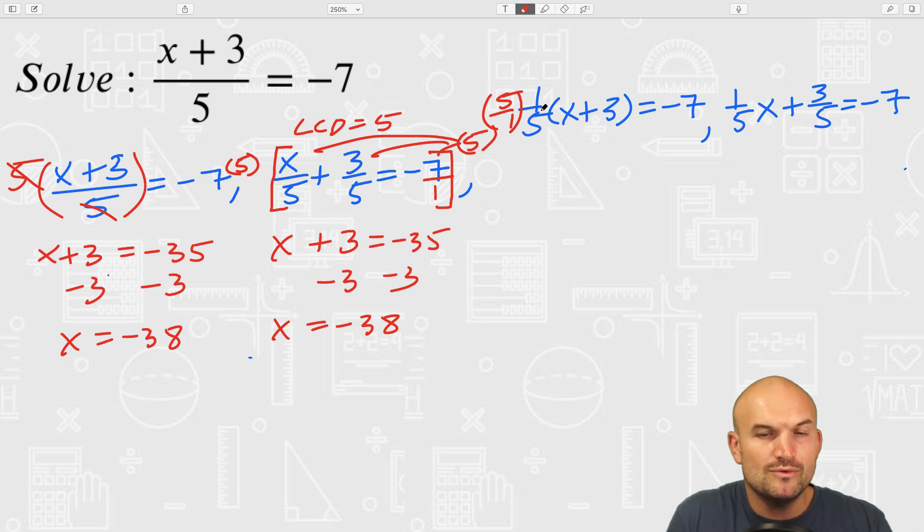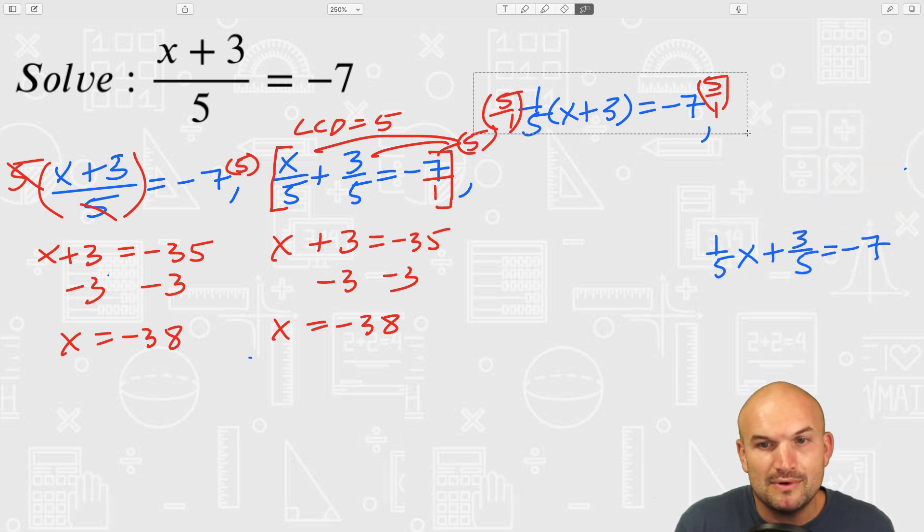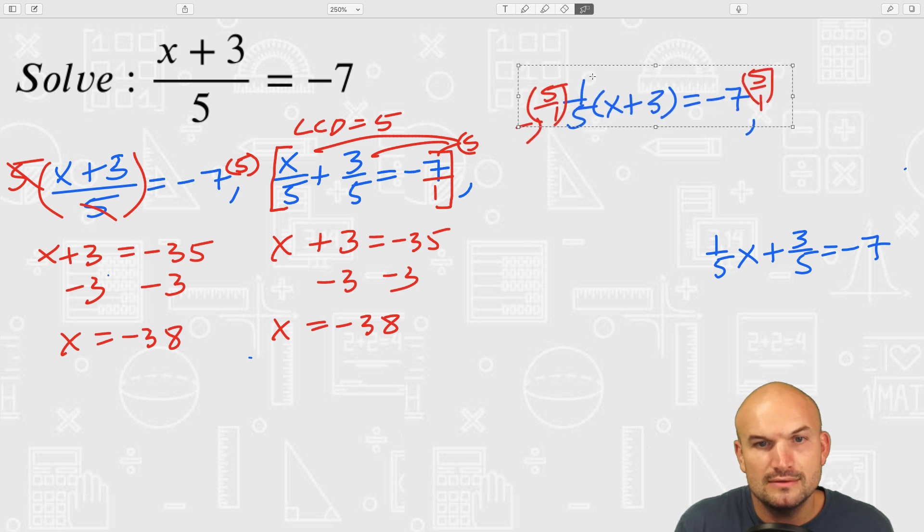Think about whenever you want to get rid of a fraction, you can think about dividing by the fraction, but sometimes that gets confusing. So we can also just multiply by 5 over 1 on both sides. So when I multiply by 5 over 1 on both sides, that's just gonna leave me with x plus 3 equals negative 35. And again, what do you know, we get the exact same solution.